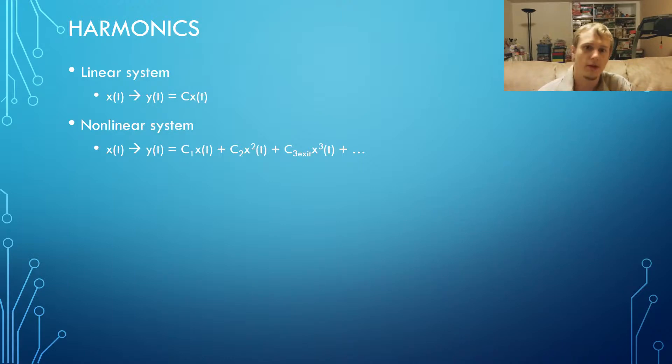In a linear circuit, an input x(t) will have an output y(t) equals c1 x(t), but in a nonlinear circuit, an input x(t) will have an output y(t) equals c1 x(t) plus c2 x²(t), and so on. These additional terms, c2 x²(t), etc., introduce these harmonics into the sinusoidal signal, into the output signal.